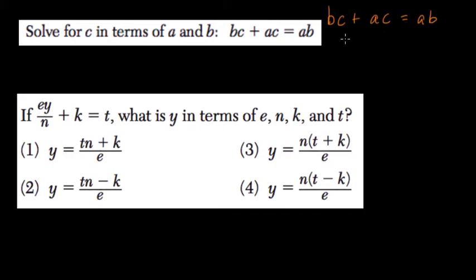So how do we isolate C? We can't just add these two. What we're going to do is factor out C. C is common in both terms. Factor it out.